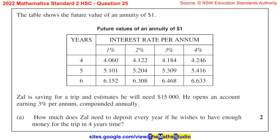Question 25. The table shows the future value of an annuity of $1. Zal is saving for a trip and estimates he will need $15,000. He opens an account earning 3% per annum, compounded annually.